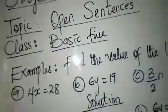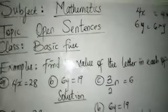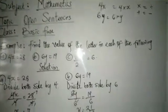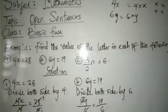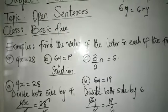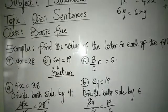So I'll be looking at some examples immediately. Find the value of the letter in each of the following. Number 1: A said 4x is equal to 28, B said 6y is equal to 19, C said 3n is equal to 6.